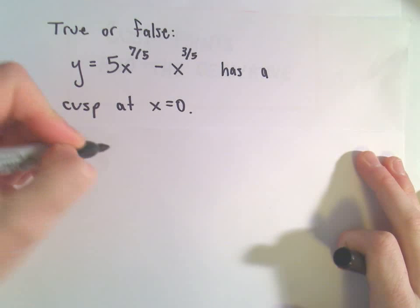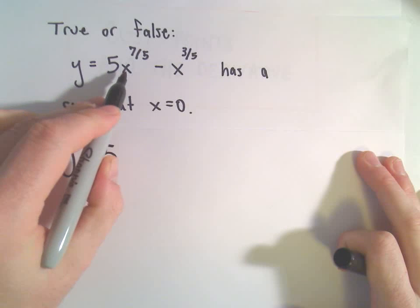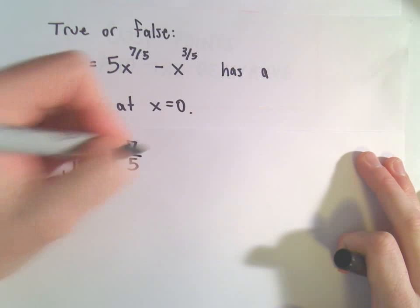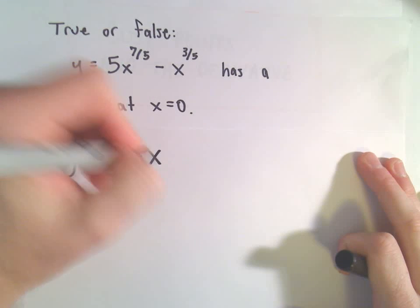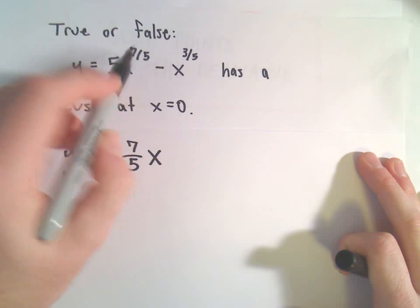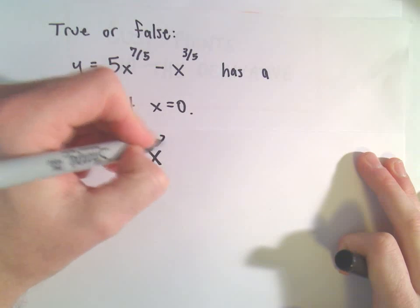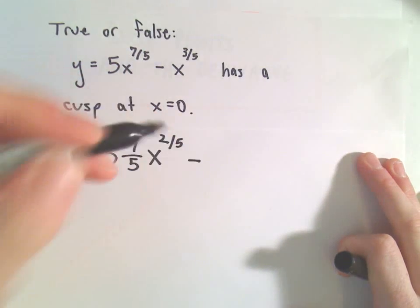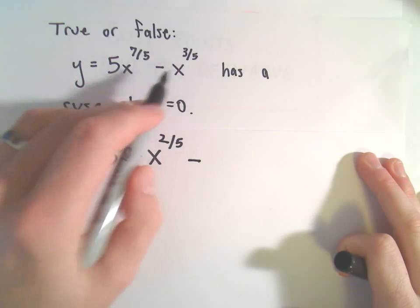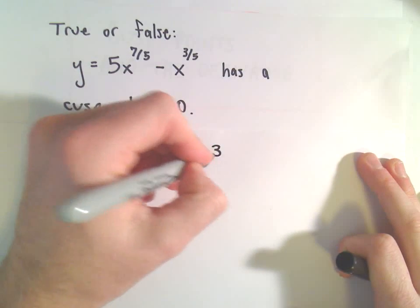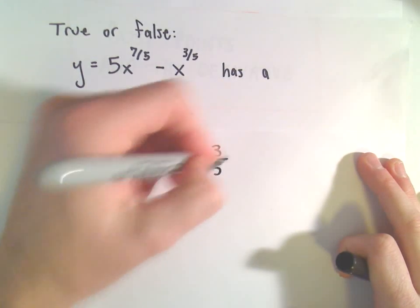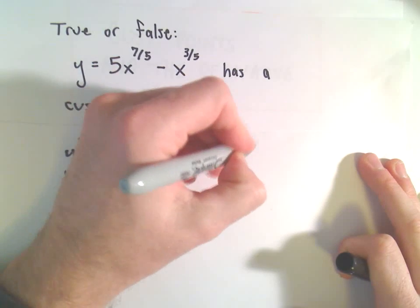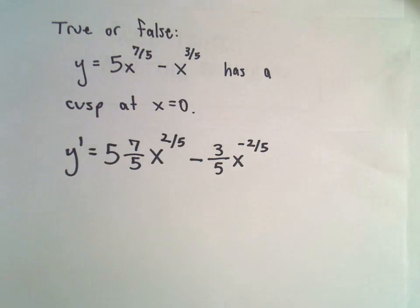The first thing I'm going to do is take the derivative. The derivative of x to the 7/5 will be 7/5 times x. If we subtract 1, or 5/5, we'll get to the 2/5 power. Minus the derivative of x to the 3/5 will be 3/5 times x. If we subtract 5/5, that'll be to the negative 2/5.